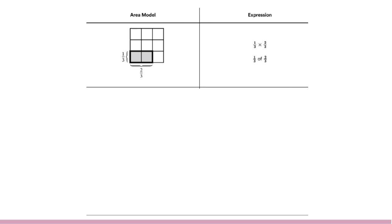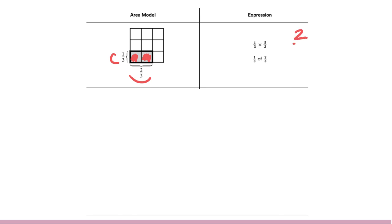Let's look at some more examples of an area model and the expressions related to it. Here we have the problem one third times two thirds, or one third of two thirds. The area model is split into thirds. We have one third, one third, and one third, but we are only wanting two of those thirds. Of those two thirds, we are wanting one third — shown on the left side of the area model. So we want one third of the two thirds, which is a smaller portion of the whole. If we figure out what this is of the whole, this would be two ninths.